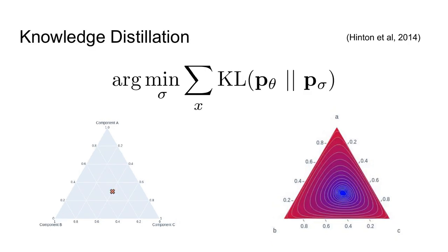Now let's introduce the idea of knowledge distillation. If we have a teacher model P theta, and that teacher model is given some input x, it's going to output a point on this simplex. This represents its distribution over the various classes A, B, and C. The way knowledge distillation works is it encourages our student model P sigma to choose a value near the teacher point on the simplex. We can see how the loss favors points that end up near the teacher model and disfavors points on the corners of the simplex itself.